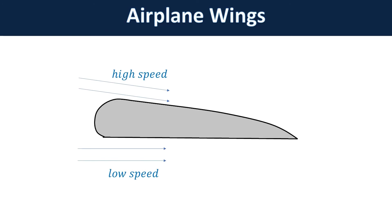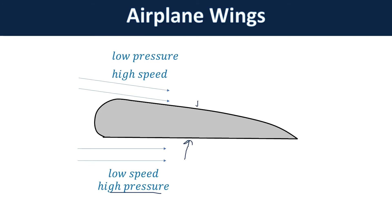Air goes over the top of the wing faster than at the bottom. In a fluid, speed and pressure are inversely proportional. So the top of the wing has low pressure and the bottom has high pressure — similar to how the bottom of an object in water has higher pressure, which causes a buoyant force. Here the higher pressure hits the wing with a higher force from below and lower pressure from above, creating a net upward force. In airplanes, that buoyant force is called lift.